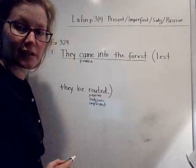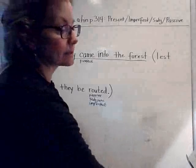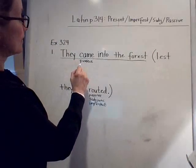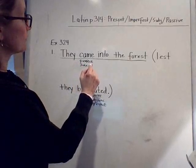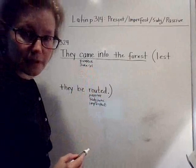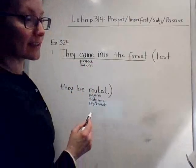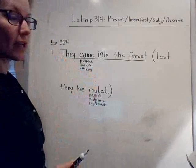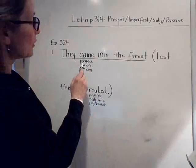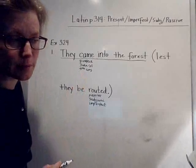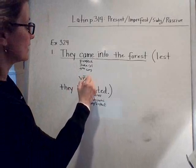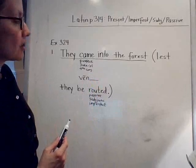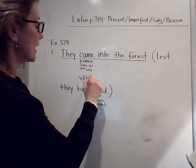We'll go ahead and start translating. This is perfect tense: 'they came' — third person plural. 'Came' is fourth conjugation, from venio, venire, veni, ventum. When we have a perfect verb, we build it on the third principal part. So starting with 'ven-,' this is perfect, fourth conjugation, third person plural, and our ending is going to be '-erunt.'